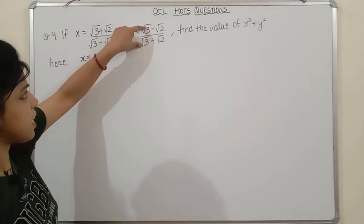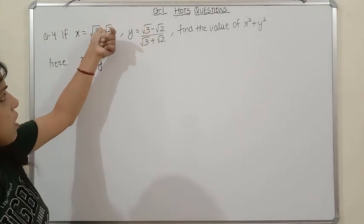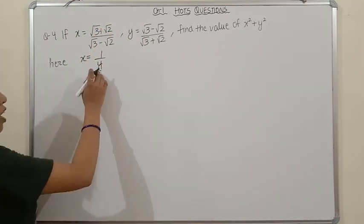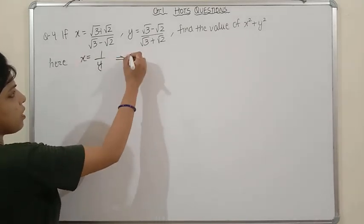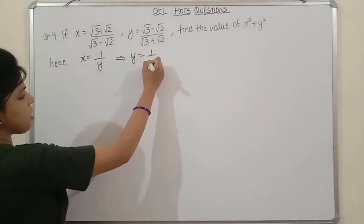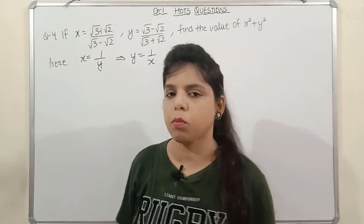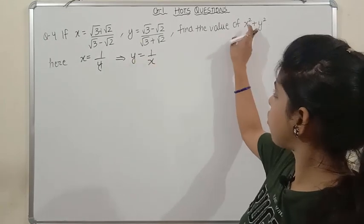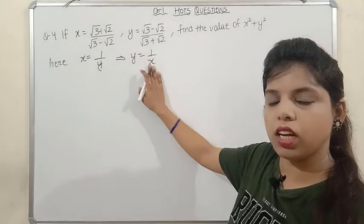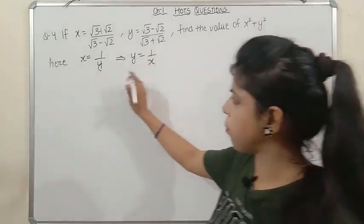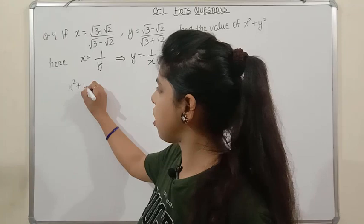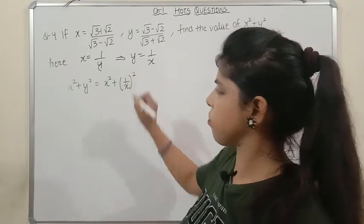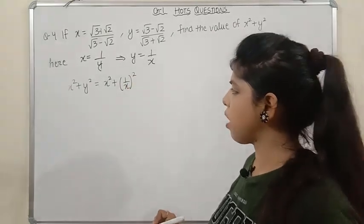The key observation is that y = 1/x (they are reciprocals). So x² + y² = x² + 1/x². To evaluate this, we use the identity: (x + 1/x)² = x² + 1/x² + 2, which means x² + 1/x² = (x + 1/x)² − 2. This avoids having to square complicated surds directly.